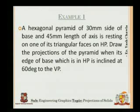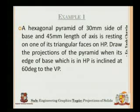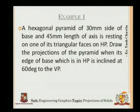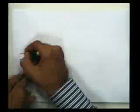A hexagonal pyramid of 30 mm side of base and 45 mm length of axis is resting on one of its triangular faces on HP. Draw the projections of the pyramid when the edge of the base which is in HP is inclined at 60 degrees to VP. This problem was started last time, so I'd like to begin solving it from the beginning again to give you a greater perspective.